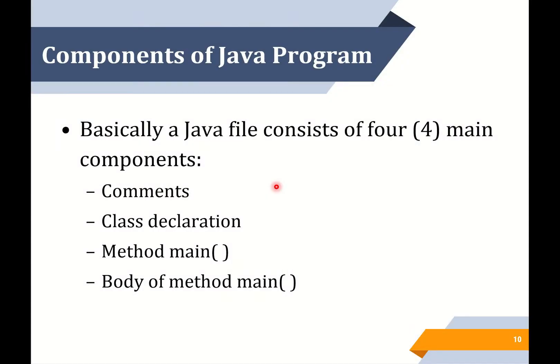Next, you should know the components of a Java program. Basically, a Java file consists of four main components: the first one is comment, second is class declaration, third is method main or main method, and the last one is the body of method main.